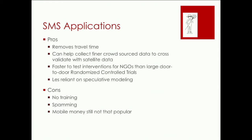The cons are that you're not training people directly — you're not facing them. If you go door to door, you face them, and people have a sense of trust that you're not just spamming them. The other thing is, with insurance, you need it connected to some sort of mobile money. A lot of people are not signed up for mobile money in the developing world. Even though they'll have simple phones with SMS, the next step to get mobile money is cumbersome.